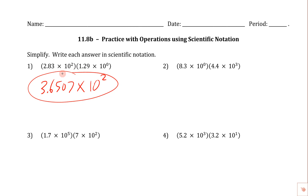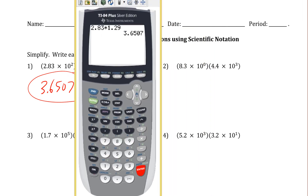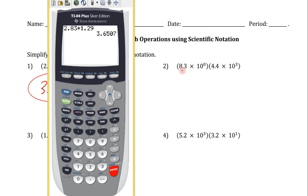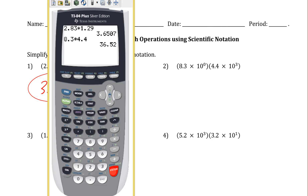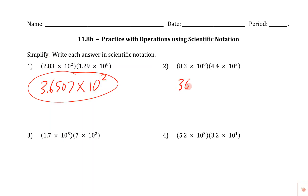Let's take a look at number two. The numbers we need to multiply together are 8.3 and 4.4. So 8.3 times 4.4 — we'll hit enter — gives us 36.52. Now you'll recognize immediately this is not going to be in scientific notation because the decimal number is not right. So let's go ahead and get the 10 to whatever power this is. There are no 10s in the first number, and 3 in the second, so we add those together and get 10 to the third.